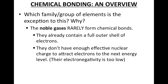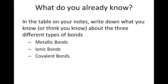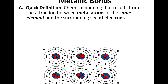We're going to skip the discussion slide — in class we were going to discuss what you know about the three different types of bonds we'll look at this unit: metallic bonds, ionic bonds, and covalent bonds. If you'd like, you can pause the video and take a moment to think about what you know and fill it into the tables in your notes. But we're going to move on since we can't have a class discussion. Today the only bond we're going to look at is metallic bonds.